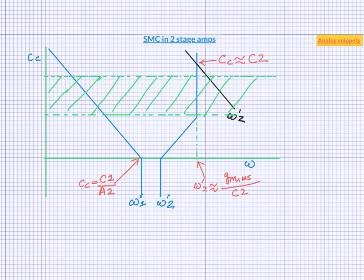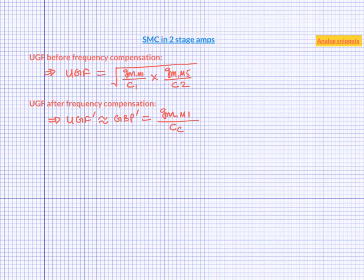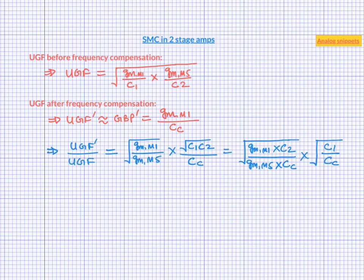Ok, now let's compare the unity gain frequency before and after compensation. As we have seen in some of the previous videos, unity gain frequency before compensation is given by this equation. We can approximate unity gain frequency after compensation by its gain bandwidth product. We can now take the ratio of these two quantities. So after some simplification, we get this equation.